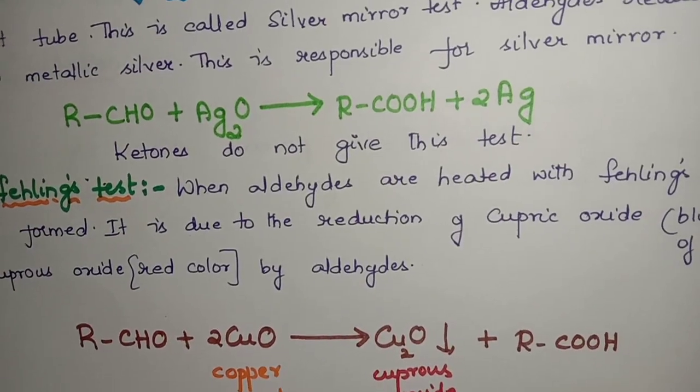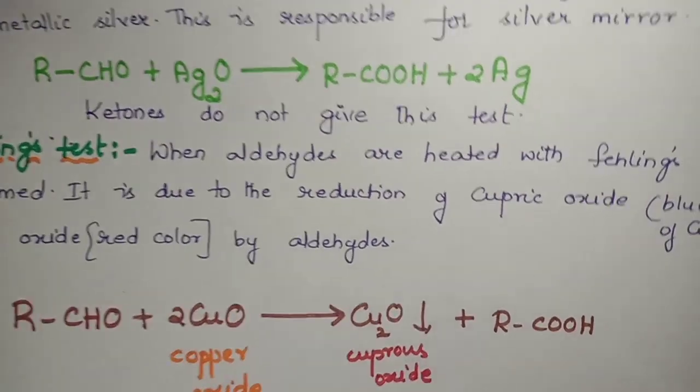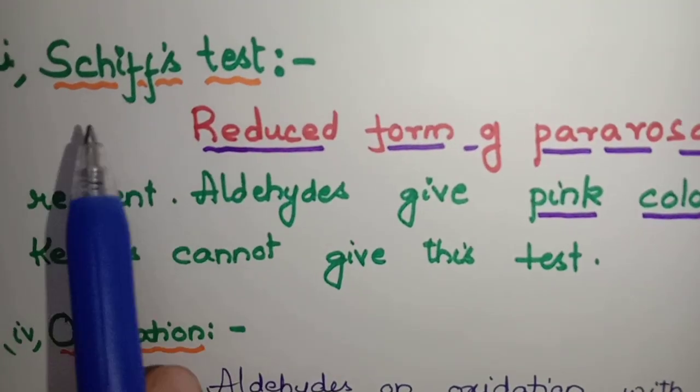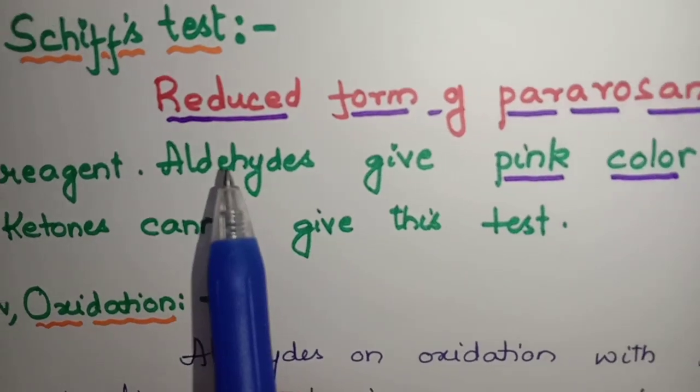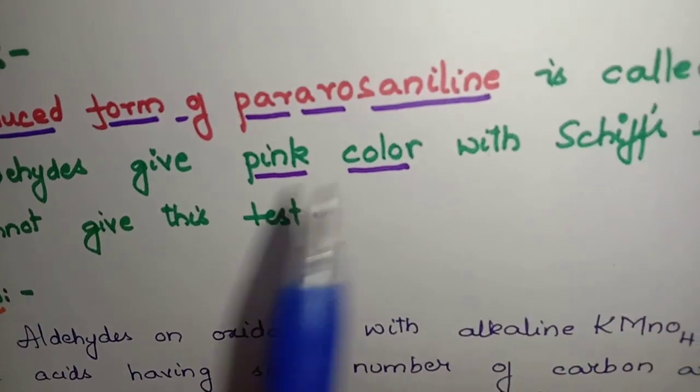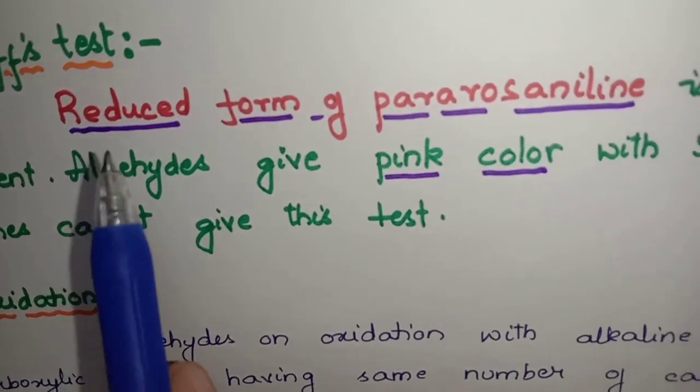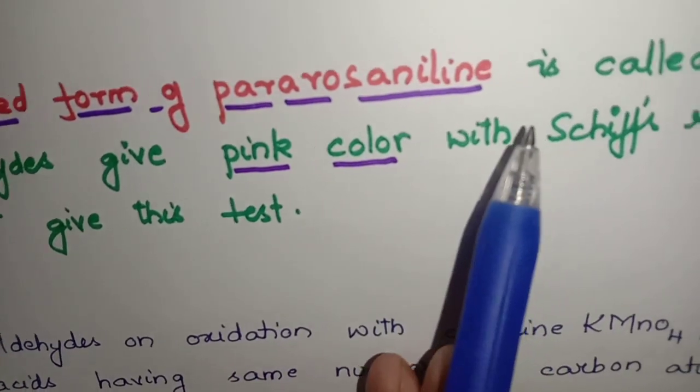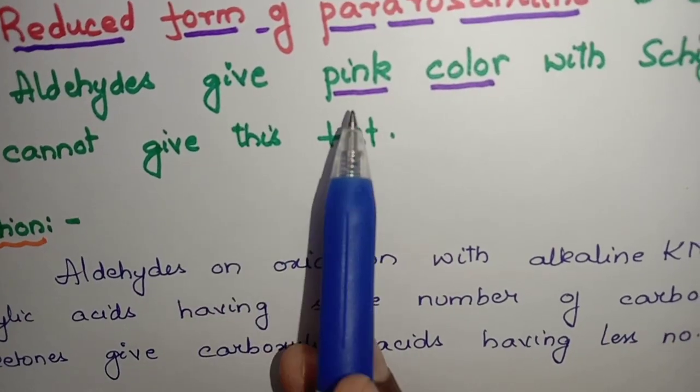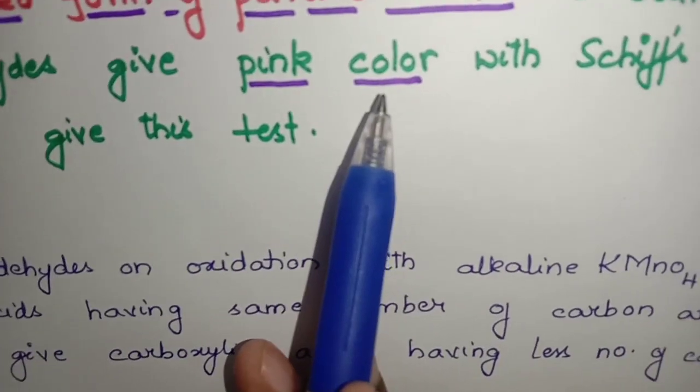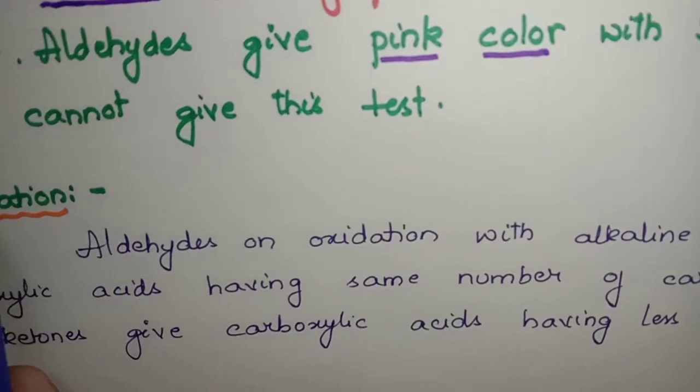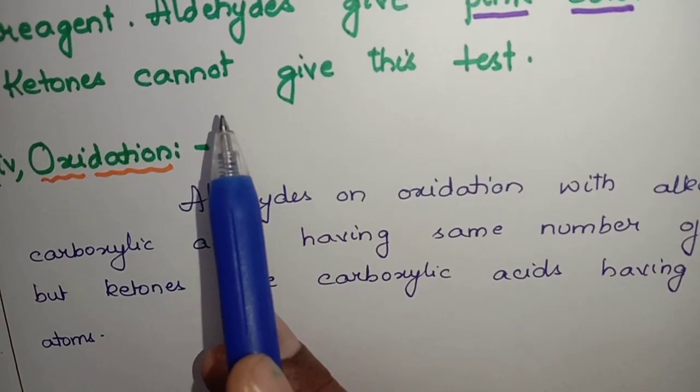The third test to differentiate between aldehydes and ketones is Schiff's test, spelling S-C-H-I-F-F. What is Schiff's reagent? Reduced form of pararosaniline is called Schiff's reagent. When aldehydes are treated with Schiff's reagent they form or give pink color, from which we say that the compound given to us has aldehyde functional group, whereas ketones do not respond to this test.